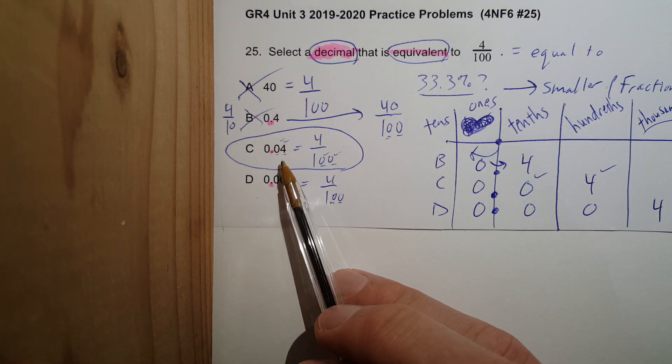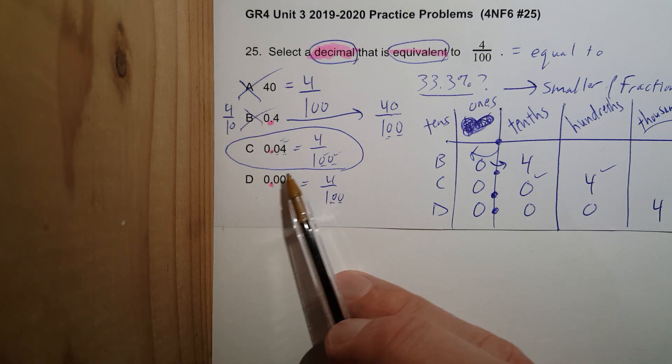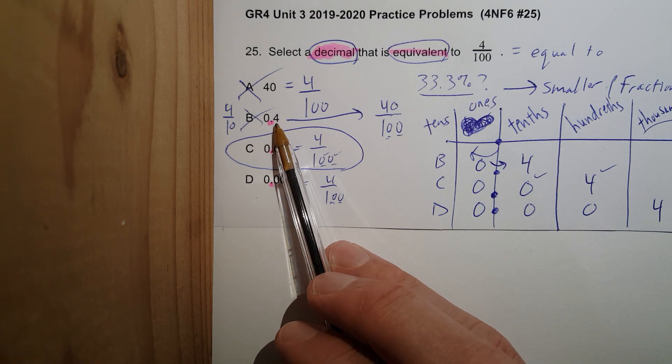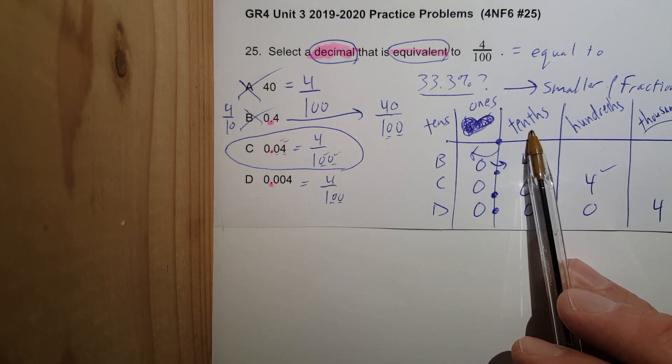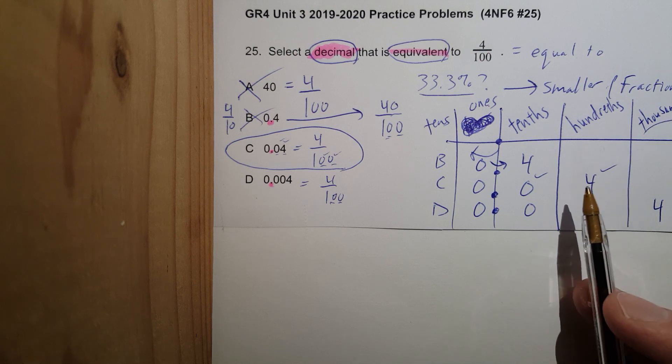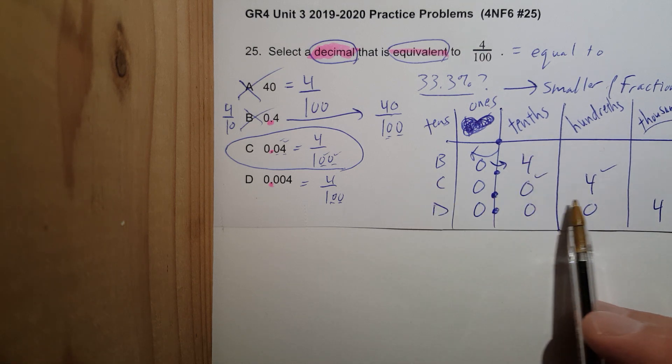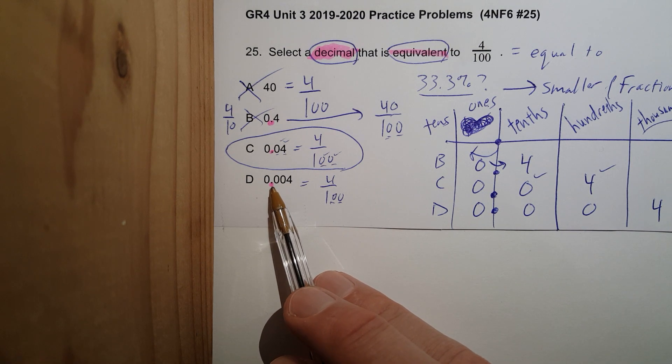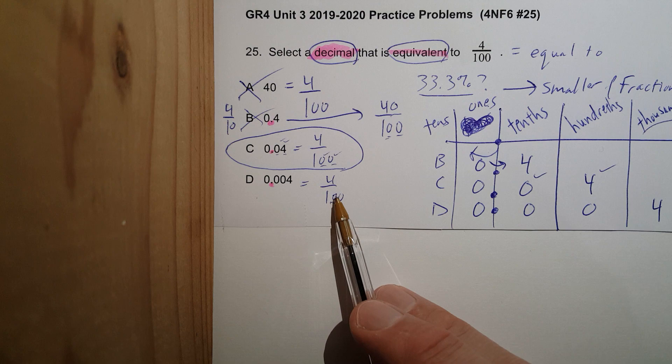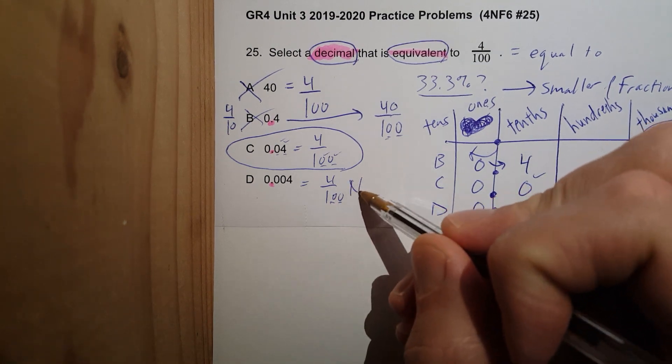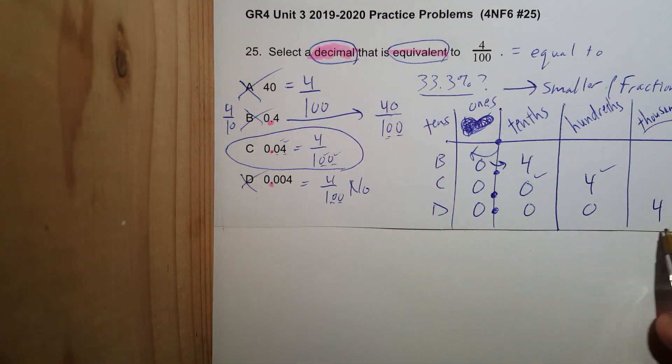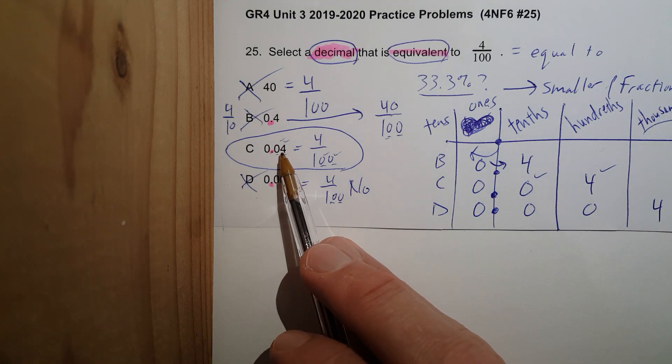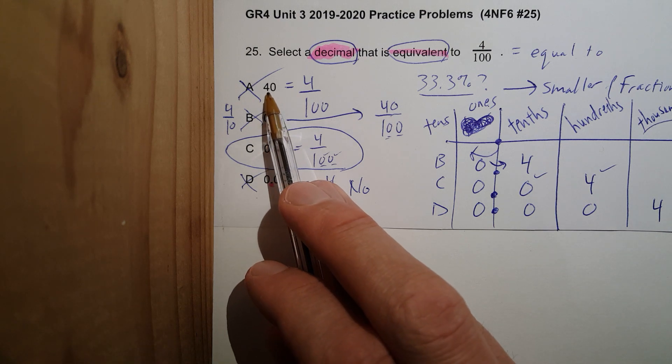Now here's what happens. Students will either choose this one or this one. They'll do it super fast and they'll see a four right there, four over a hundred, and they'll pick this one. But this is four tenths. Okay, four tenths, not four hundredths. Let's go to the next one. Oh so small, point zero zero four. Four. No. This is four thousandths. Four thousandths. Four hundredths. Four tenths. Four thousandths.